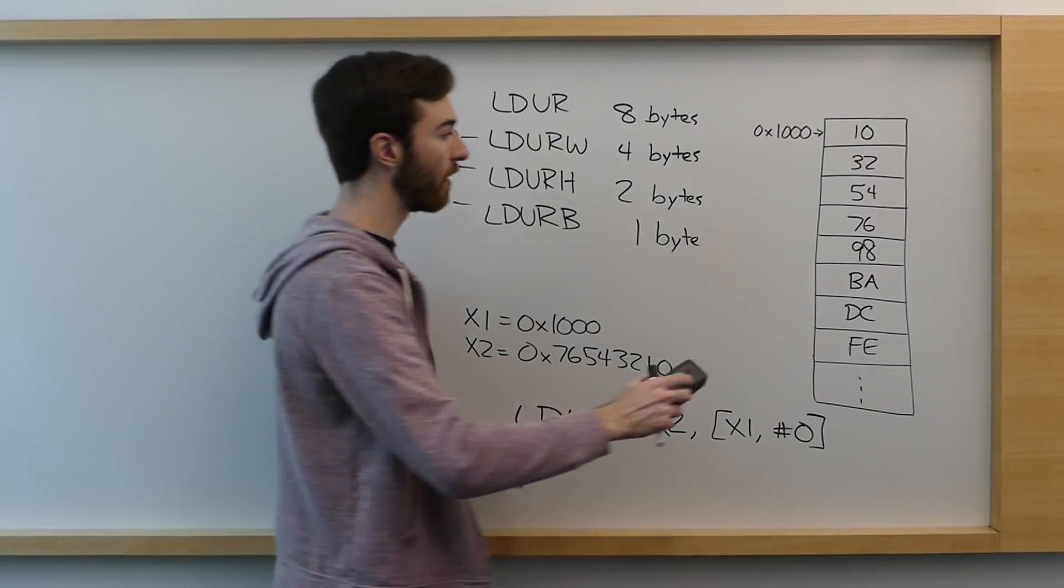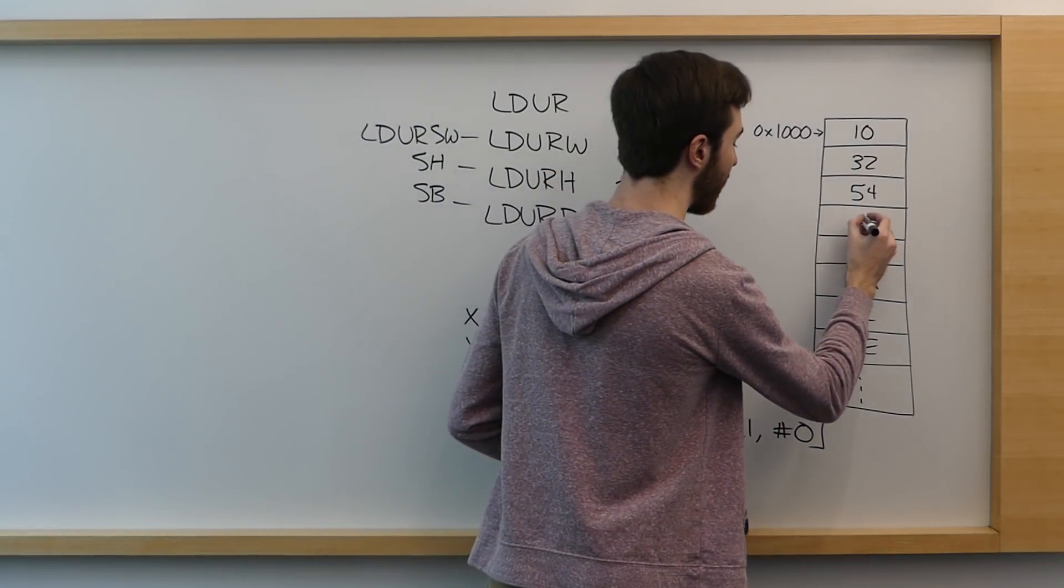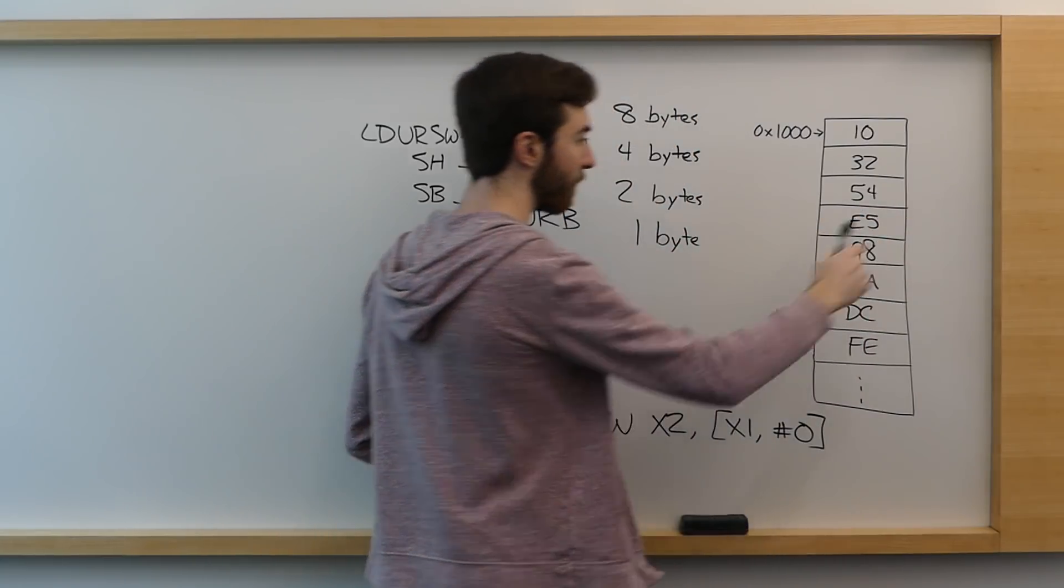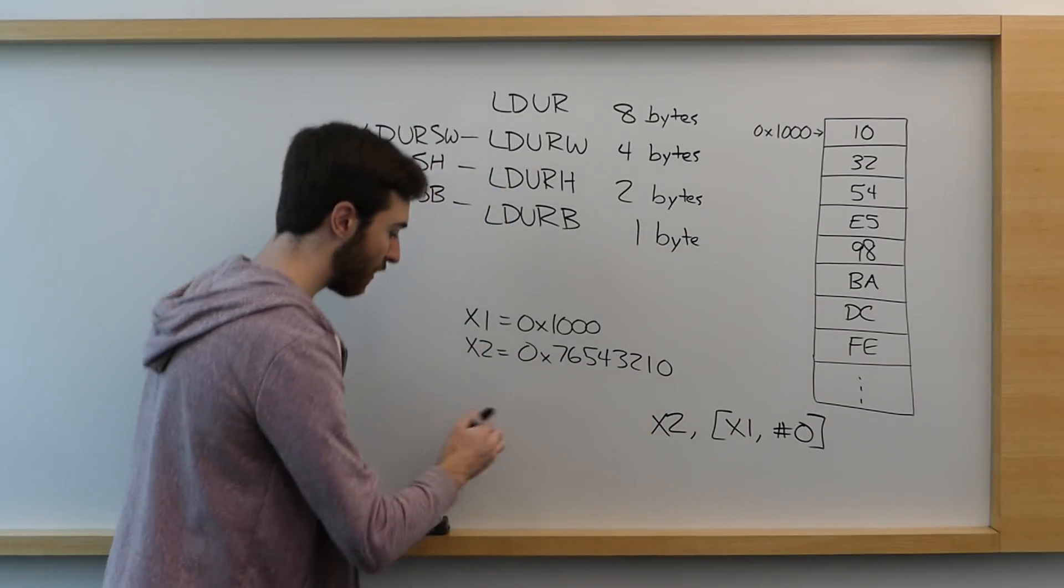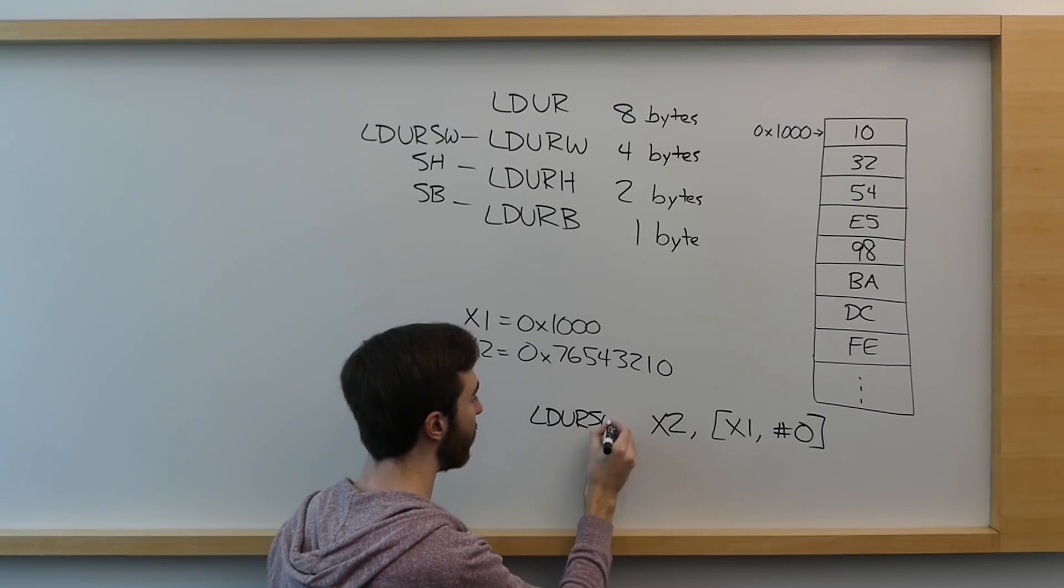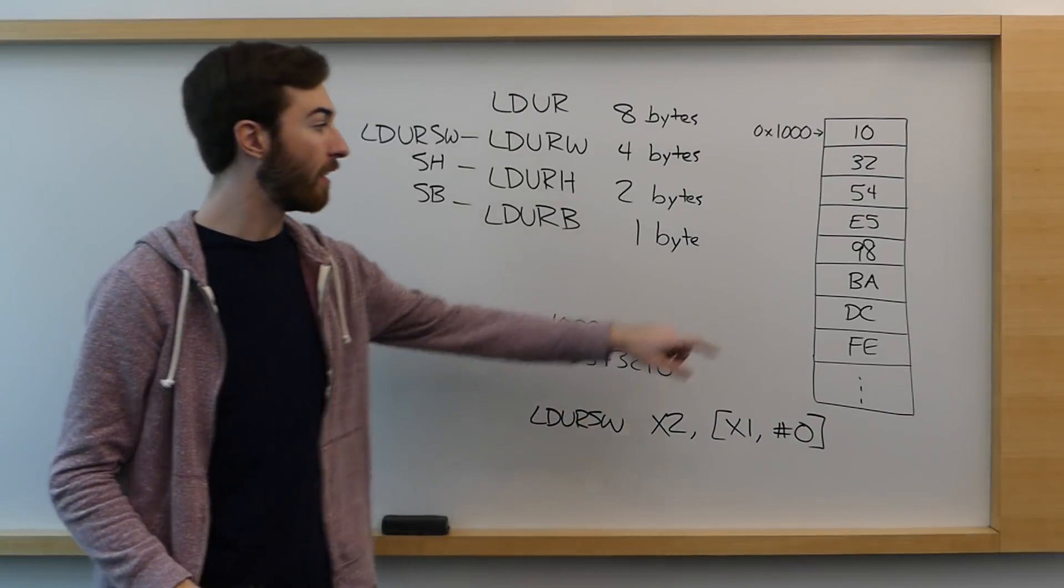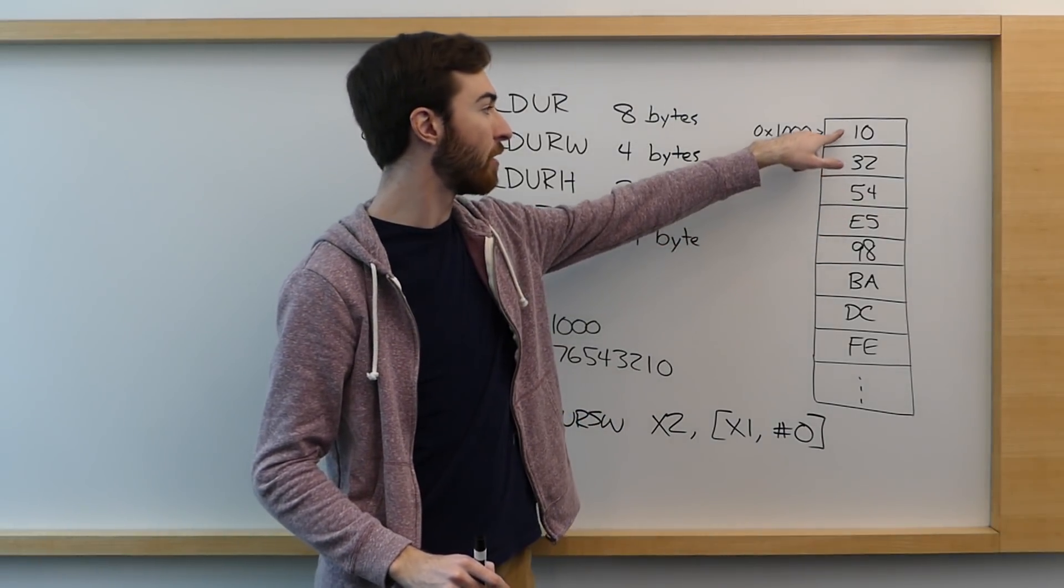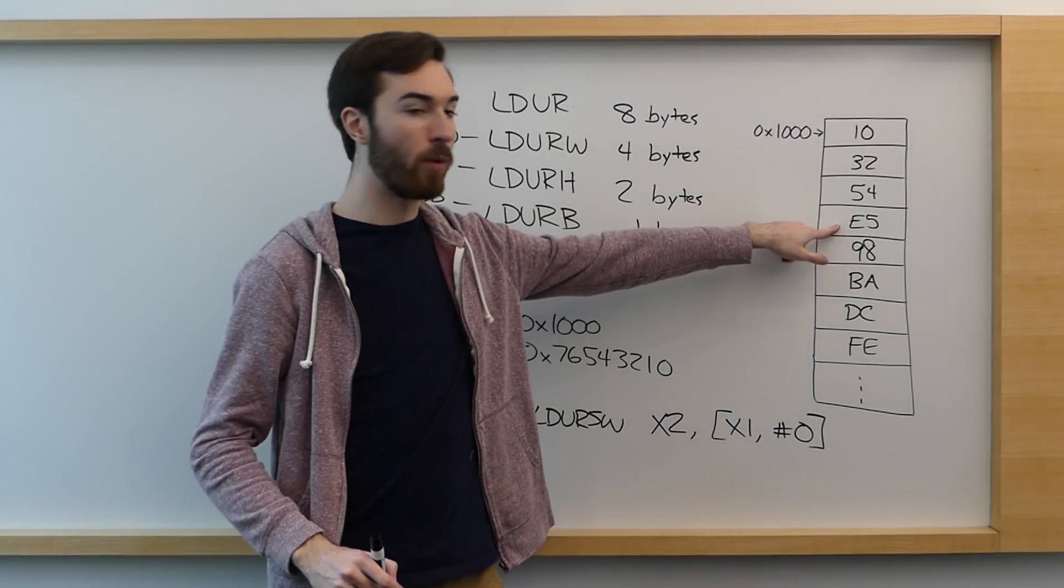So for example, if we change this to be maybe E5 or anything like that, if we then execute an LDURSW command, it knows that the number you want to read in is E5543210. And because the leftmost bit of that number is a 1, because the leftmost bit of E is 1,